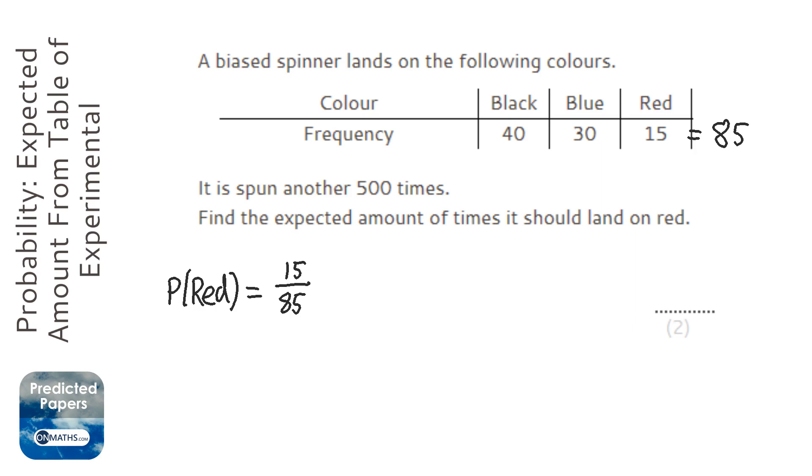It says it's going to be spun another 500 times and we have to estimate roughly how many times it will land on a red. And the way we do that is get the experimental probability, which we've worked out from our experiments on the table, which is this table here.